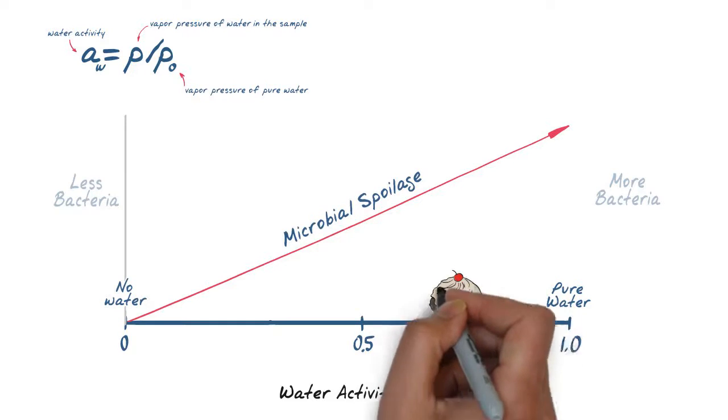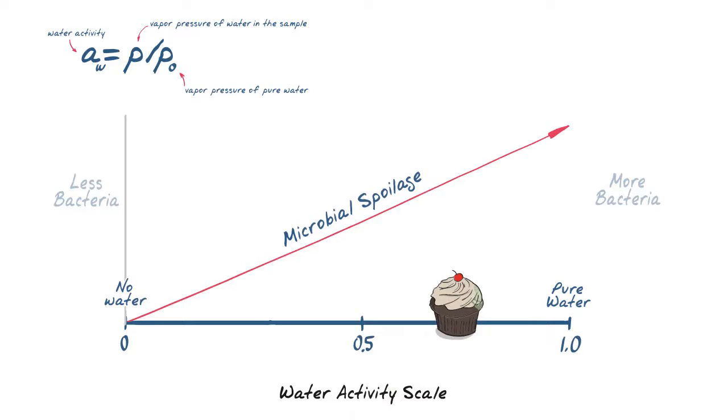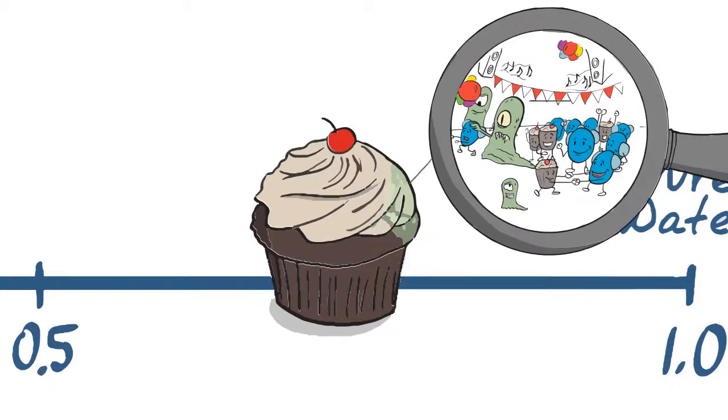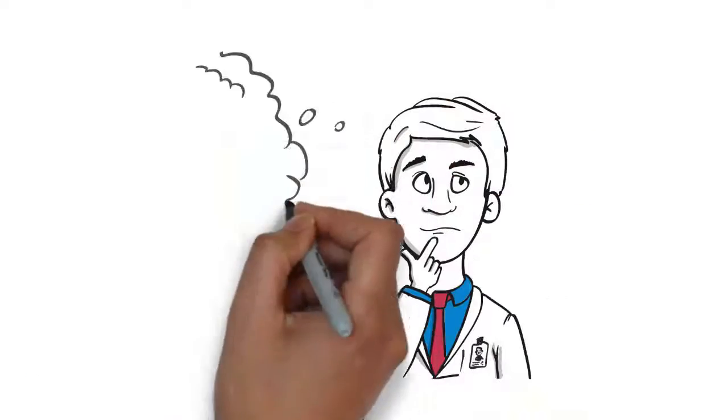In relation to cupcakes, a water activity measurement of 0.5 or lower would mean the likelihood of microbial growth is very low. In Walter's cupcakes, which measured at 0.78 AW, it appears too many water molecules are unbound, facilitating mold growth.